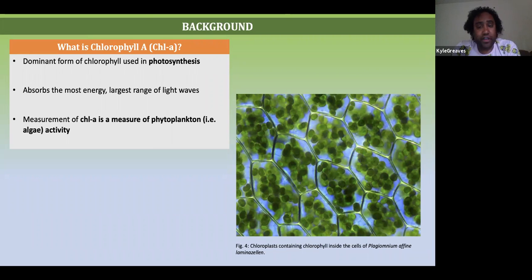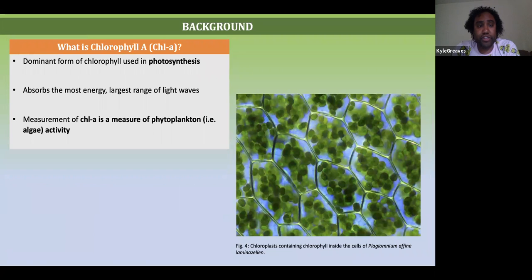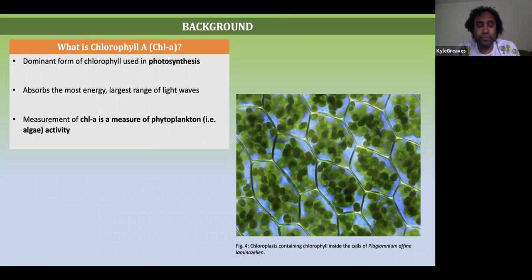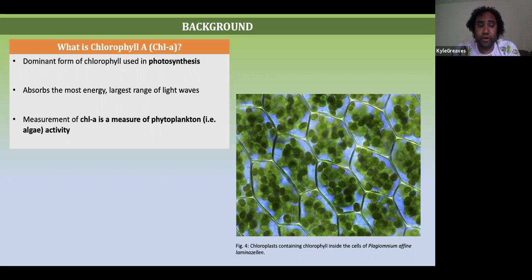The variables that we are studying are chlorophyll A and its relationship to dissolved organic carbon. Chlorophyll A is the dominant form of chlorophyll used in photosynthesis. When you think of plants and algae, chlorophyll A is the pigment that makes them green. It absorbs the largest range of light waves and the most energy. Basically, a measure of chlorophyll A in lakes is also a measure of the amount of phytoplankton, also known as algae. It's important to measure this because we need to know how the planktonic food web is affecting the health of the lake ecosystem.